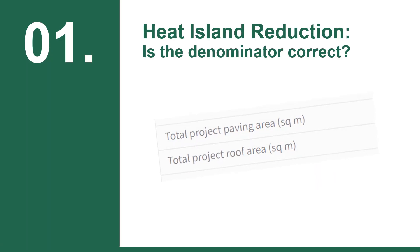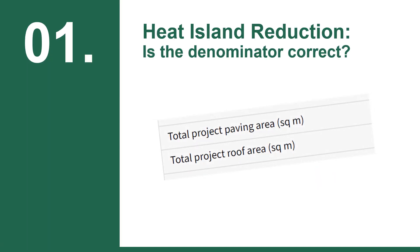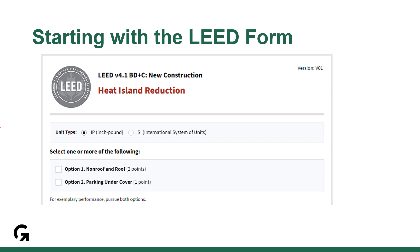The first issue we commonly see is with the total project areas, which make up the denominator in the equation. Let's take a look at the form in LEED online. The form handles many of the calculations for you. Most project teams start with the form to confirm compliance. However, unlike other forms, it's easier to actually start at the end of the form to think about the site holistically.